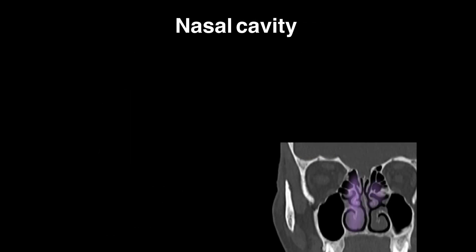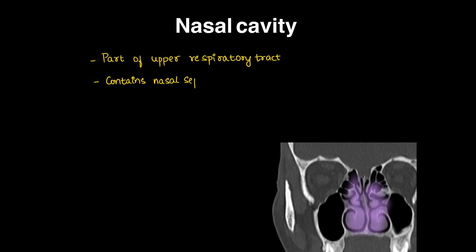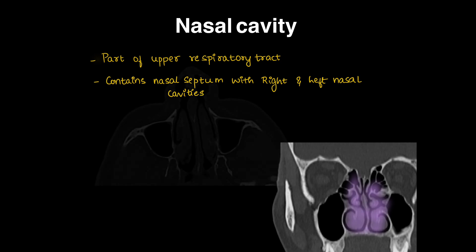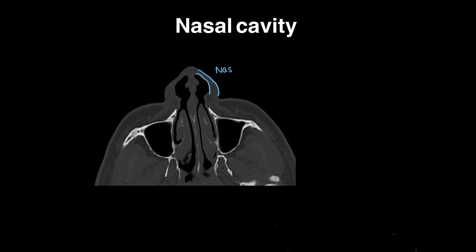We are done with paranasal sinus anatomy. Coming to the nasal cavity — it is part of the upper respiratory tract. On CT, it contains the nasal septum dividing the cavity into right and left nasal cavities.